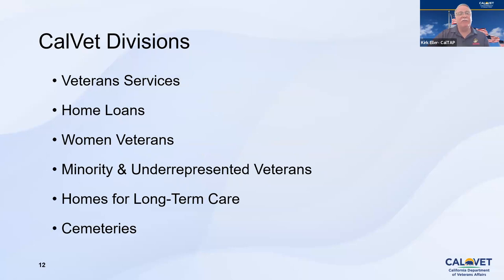This is a list of our CalVet divisions. Veteran Services is one where I reside in the CalTAP unit. We have our home loans division, which provides home loans to veterans, and there is a capability of applying a VA federal guarantee with that home loan. We will have some information in the chat on how to contact our home loan specialist, or you can access that information on our website.